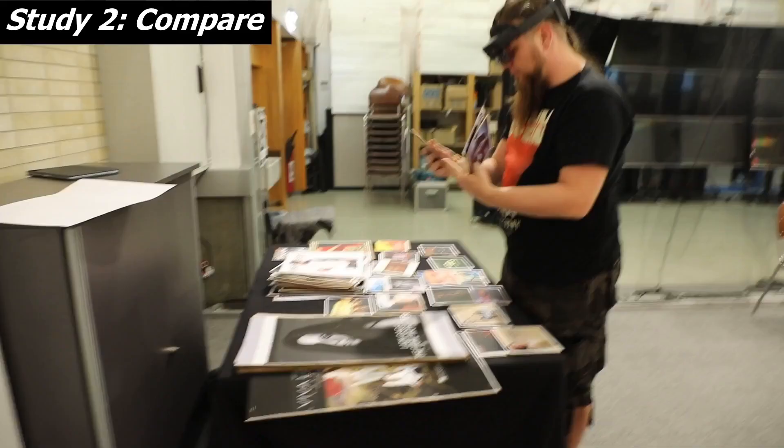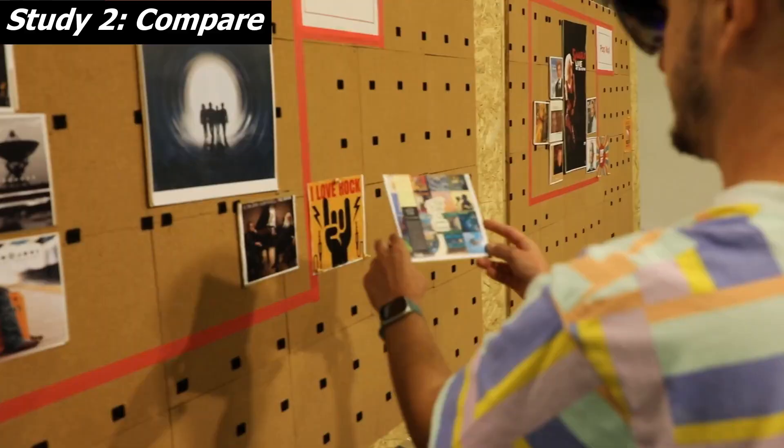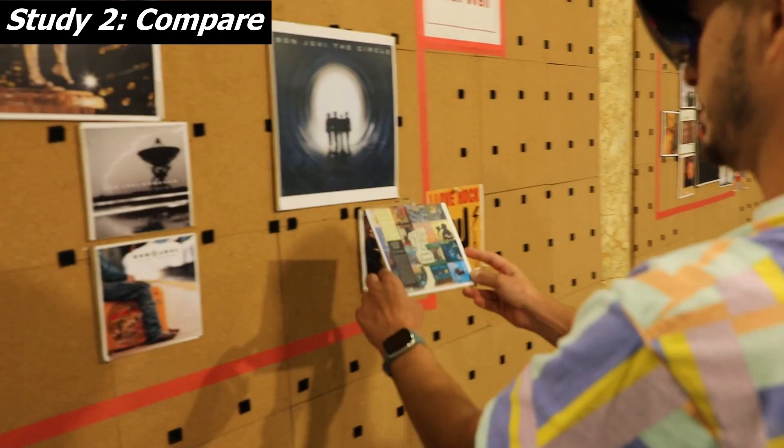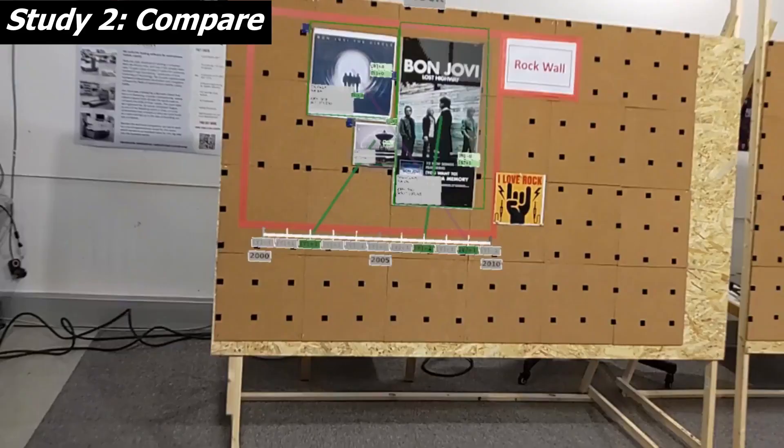Here, the participant wearing the HoloLens 2 is looking for records and sorting them by interest. Once he has chosen one, he can hang the record on the preferred wall to gain more points.